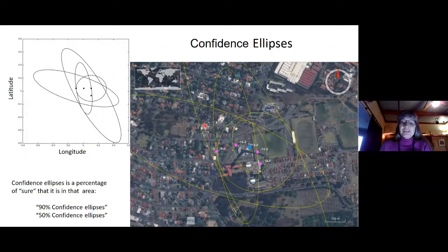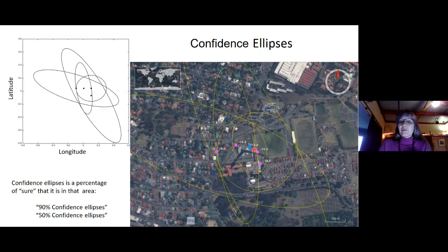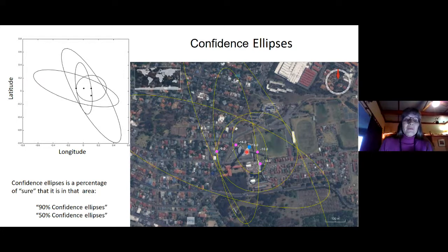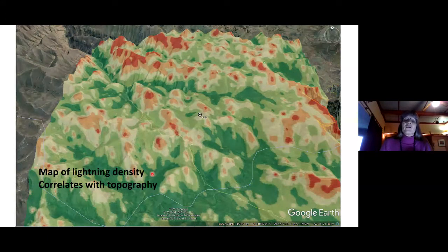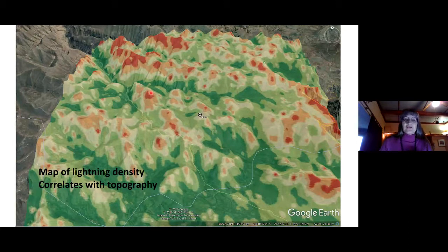Here are our confidence ellipses. This is an example with the Brixton Tower — we know that the lightning flash connected with the Brixton Tower — and these are the locations from the network and their confidence ellipses, and you can see they all basically overlap where the tower is. There are 90 percent and 50 percent confidence ellipses and we know that this one actually attached to the tower. We can develop a map of lightning density and we immediately see that it correlates with topography — the high peaks tend to get more lightning strikes.